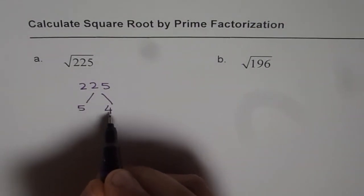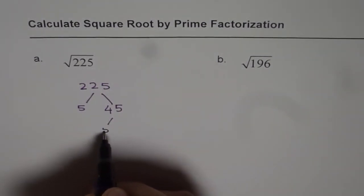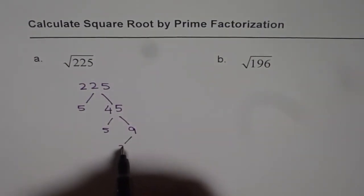5 times 4 is 20, and then 25 is 5 times 5. Now, 45 is 5 times 9, and 9 is 3 times 3.